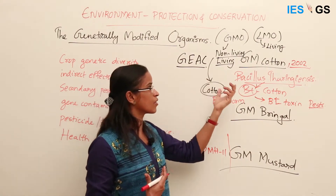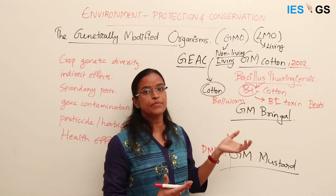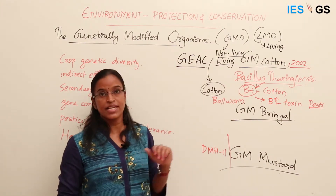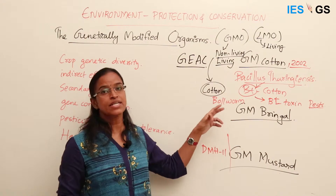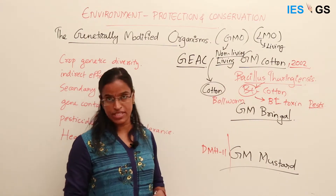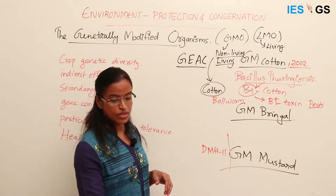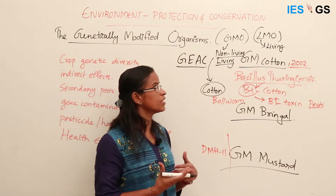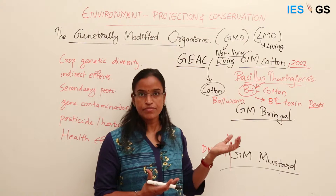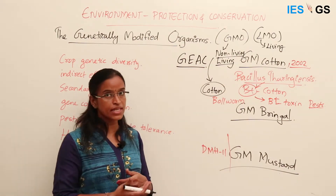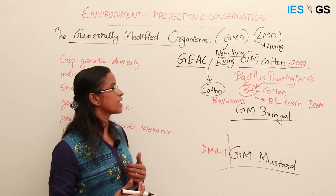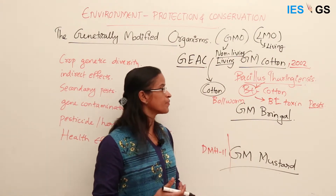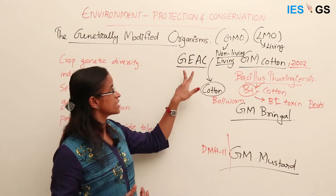Secondary pest attacks increased: instead of bollworms, other pests started attacking the plants. Seeds and insecticides became very costly for farmers, and many cotton farmers in the regions where GM cotton was introduced faced severe difficulties. GM cotton ultimately proved to be a disaster in terms of increasing cotton production in India.